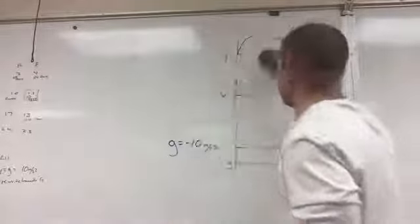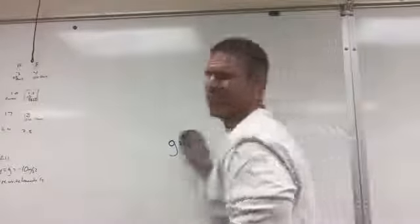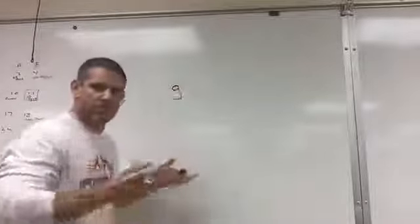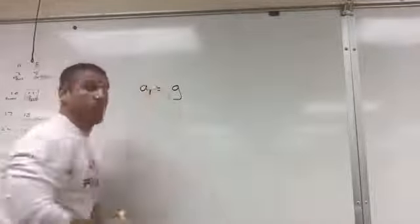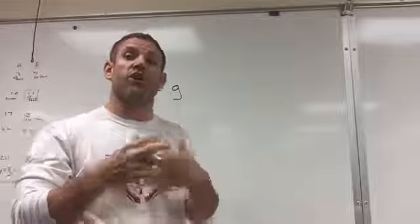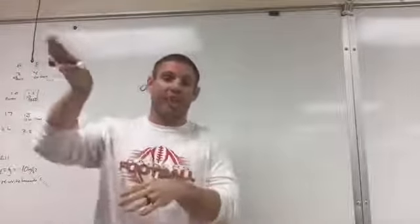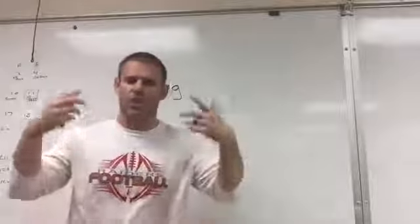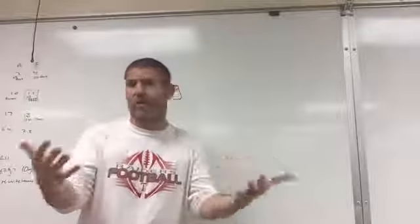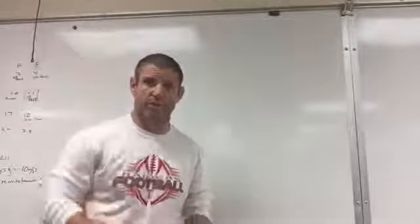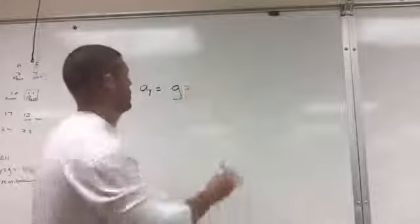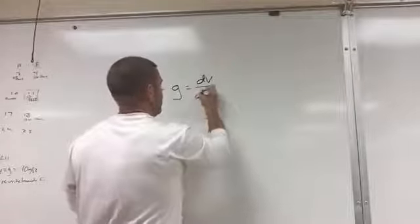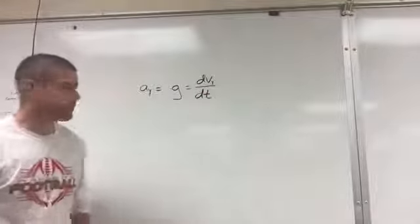So how can we get initial positions and figure things out? Still using integration, still getting area. If we take our acceleration — which we'll call gravity, or acceleration in Y — gravity is always going to be the derivative of velocity Y with respect to time.